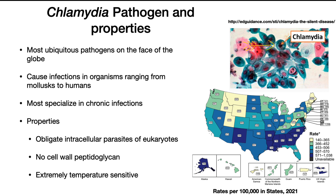Here is a picture of chlamydia, and you can actually see a clump of cells inside a host cell. Looking at the United States and the incidence of chlamydia, you can see that while it is found everywhere, it is most commonly concentrated in the southern United States. Part of this problem is likely due to poor sex education in those places.